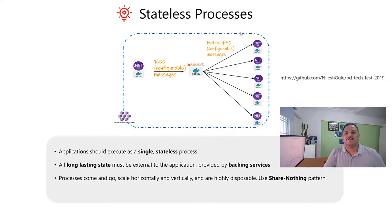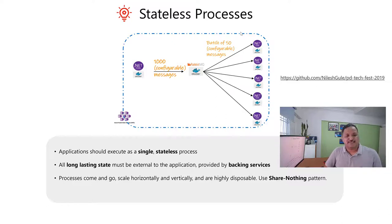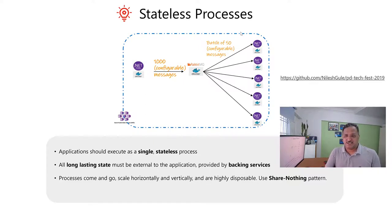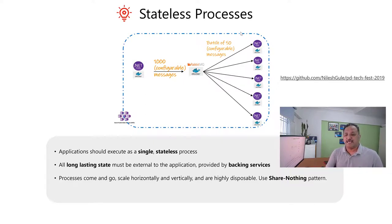So let's go into the next factor, which is stateless processes, or processes as it is called in the 12 factor app. This states that we should try to run the application as a stateless process. But what does that exactly mean? If we look at most applications, we have some or other form of state. We have stateful applications — almost 90% of the applications that we build are stateful. So why do we say that we should have a stateless process?